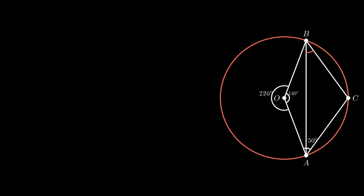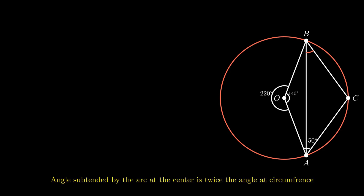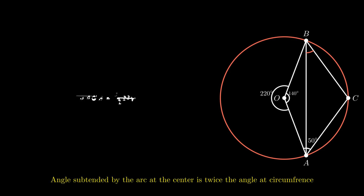Now angle BCA is the angle formed by arc AB. By using the theorem that the angle subtended by an arc at the center is double the angle subtended by the same arc on the remaining part of the circle, we get angle BCA as half of the reflex of angle AOB. On simplifying, we get angle BCA as 110 degrees.